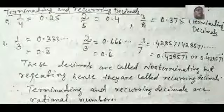So it can be written also 0.428571 bar, or 0 put a dot on the first number and 1 at the last number, put a dot and explain. That is your recurring decimals. Terminating decimals and recurring decimals.